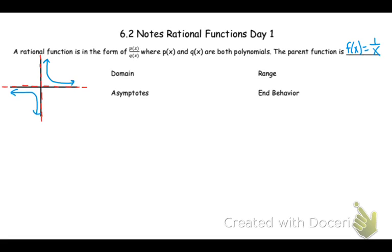When y equals 0, that's going to be my horizontal asymptote. The graph gets closer and closer but doesn't actually touch that value. It is possible to cross a horizontal asymptote, but typically a horizontal asymptote shows your end behavior — what your graph is going towards. It is not possible to cross a vertical asymptote because that's where division by zero would occur.